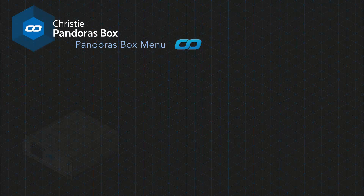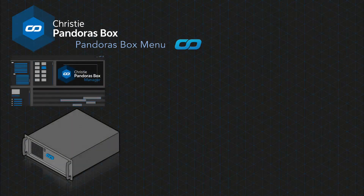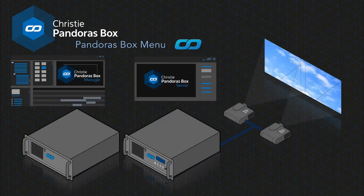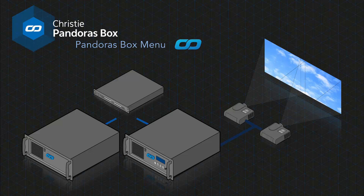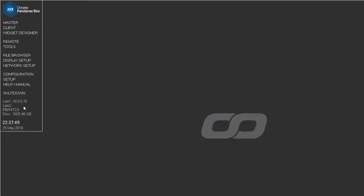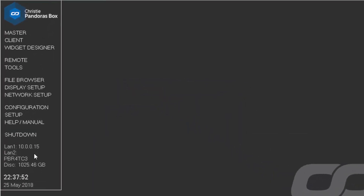Now let's demonstrate the connection between a manager and a client. Our setup consists of one player hardware with a manager license and one dual server connected to two projectors — both devices connected to the same network switch. The Pandora's Box hardware comes with two onboard network ports called LAN and LAN2. The IP addresses for LAN and LAN2 are displayed on the Pandora's Box menu if they are set.